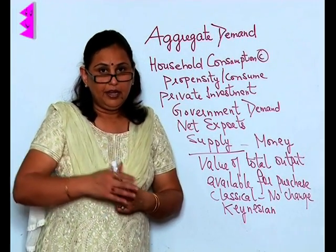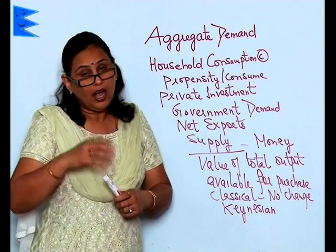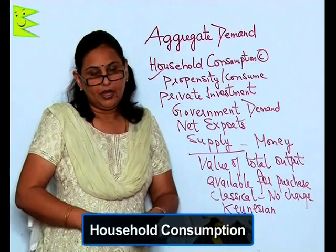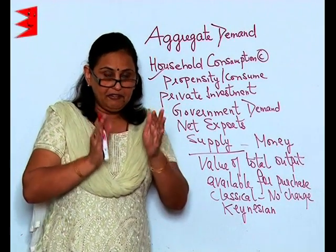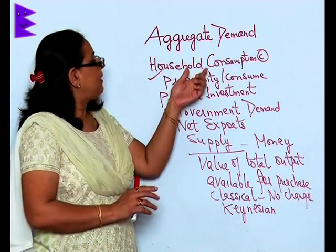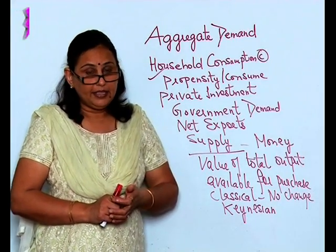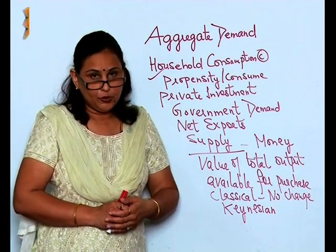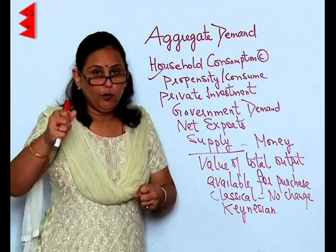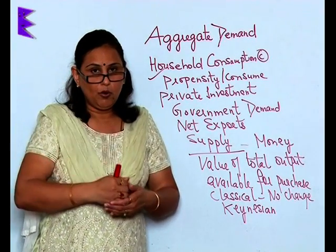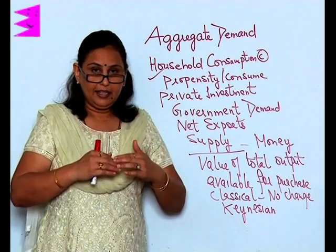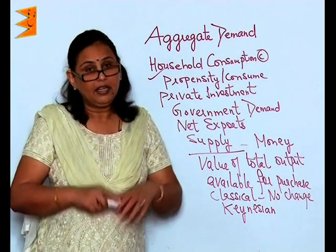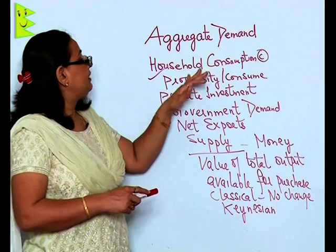When we talk of aggregate demand, there are some components which are very important to be included. The first is household consumption — whatever every household consumes is termed as household consumption demand. In this, we have to understand something called the propensity to consume: my income allows me to consume at a particular level. If the income is more, I will consume more; if my income is less, it will be less. That is the propensity to consume, and household consumption is the first pillar of aggregate demand.